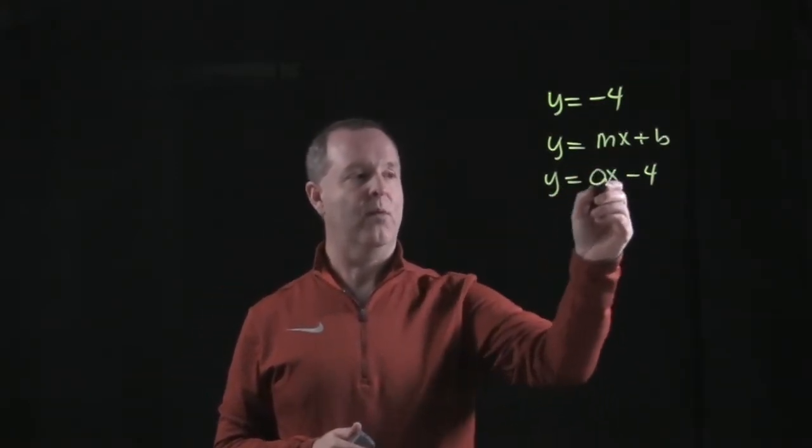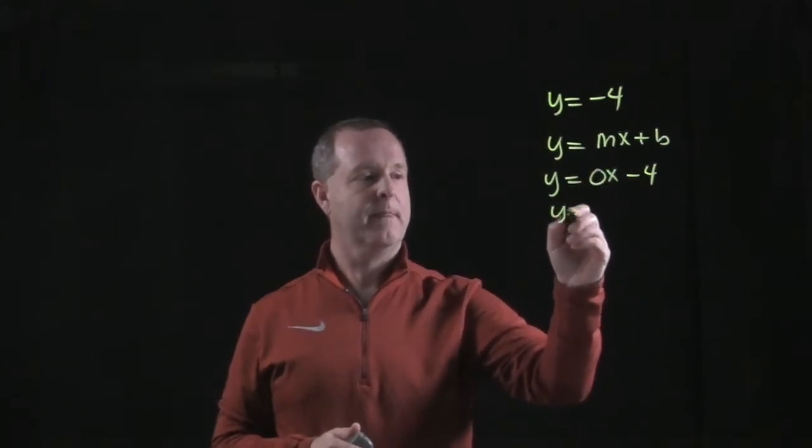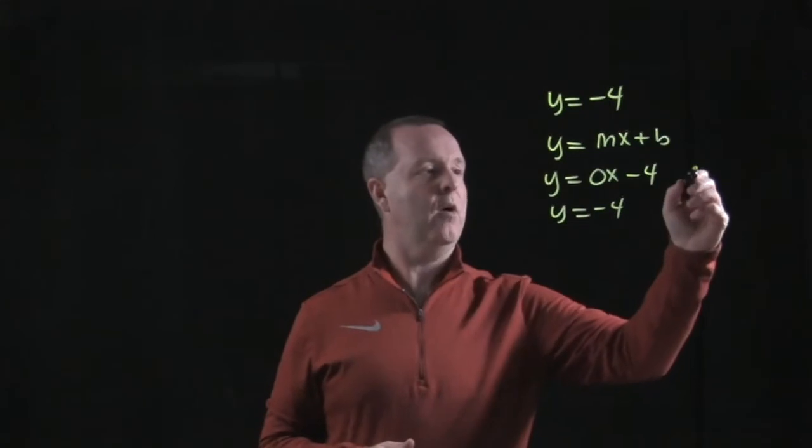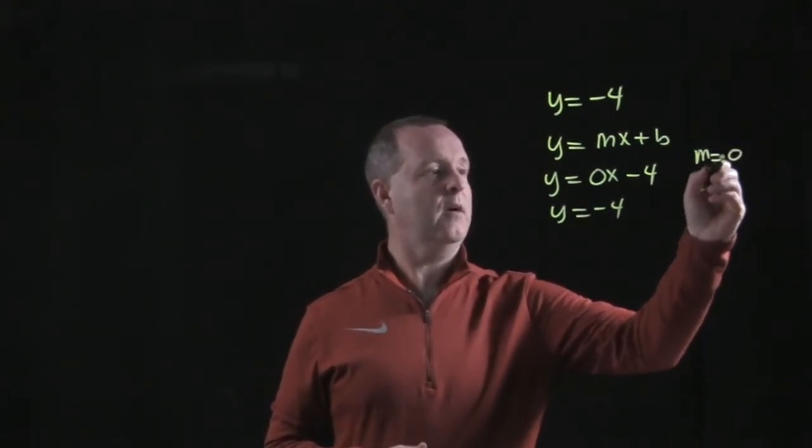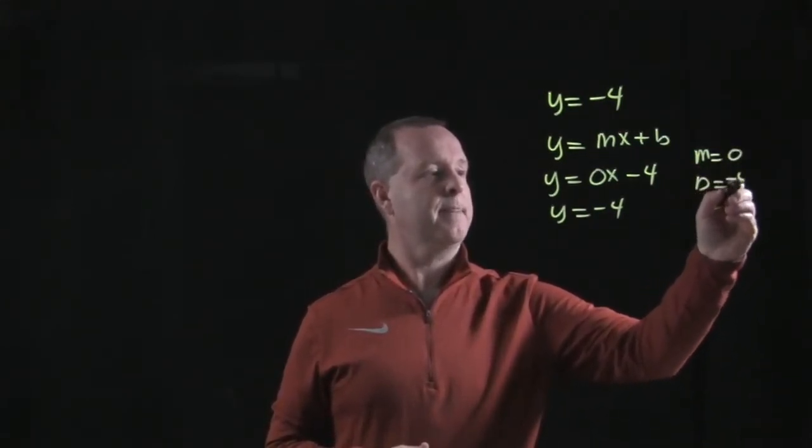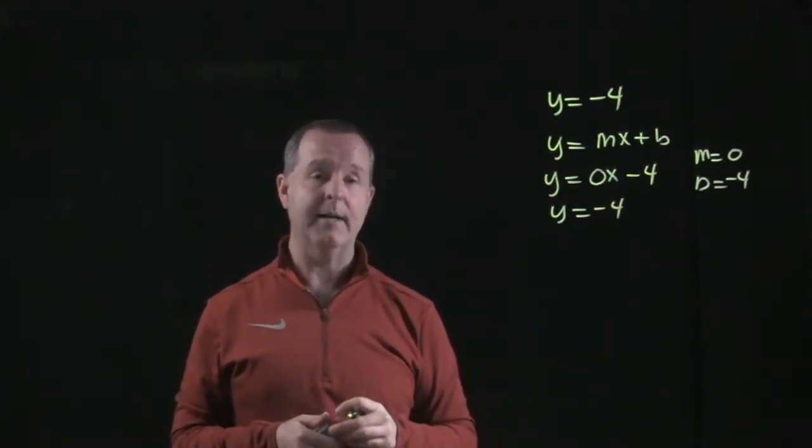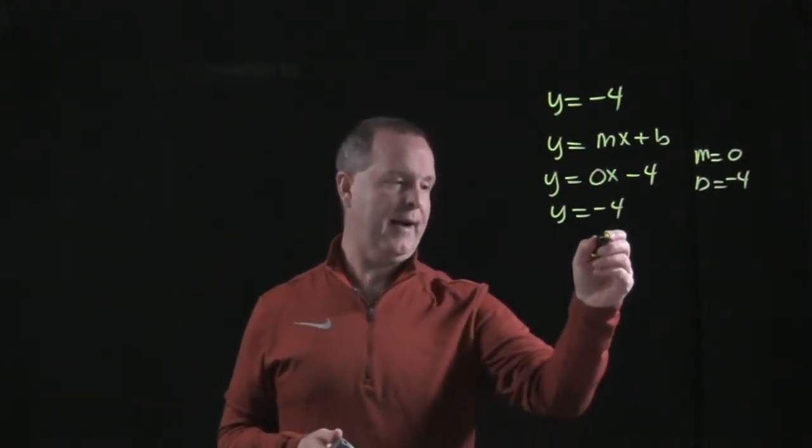And then I can see that once the zeros cross out, I'm back to y equals negative 4. So I'm able to see that my slope is zero and my starting point is negative 4. And remember, all we need to have is a slope and a starting point. So let's graph that.